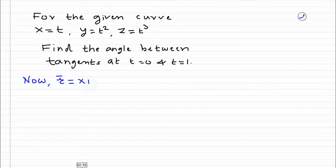Now we know that position vector is given by x i plus y j plus z k. So substitute the values of x, y, and z. Value of x is t, value of y is t square, and value of z is t cube.